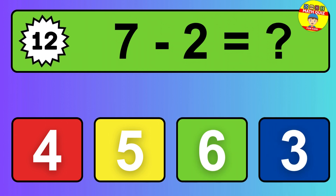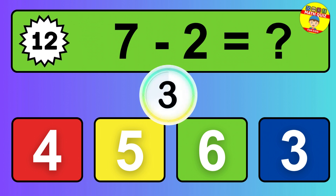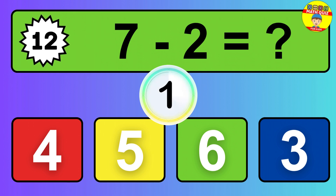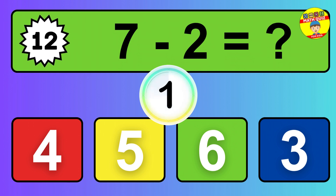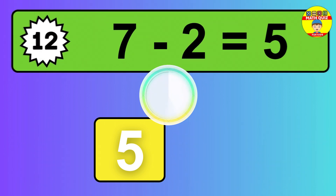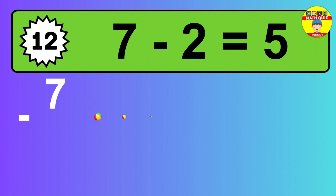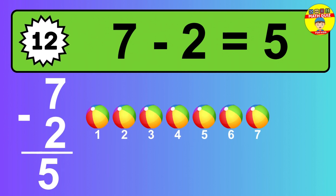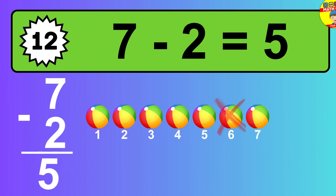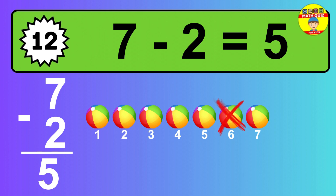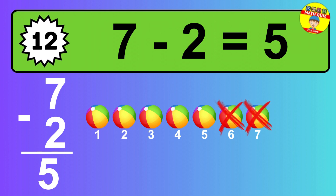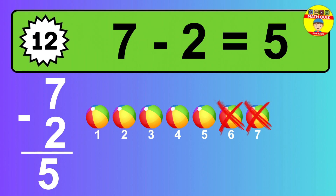Question 12. The answer is 7 minus 2 is 5. Let's count it. 1, 2, 3, 4, 5.